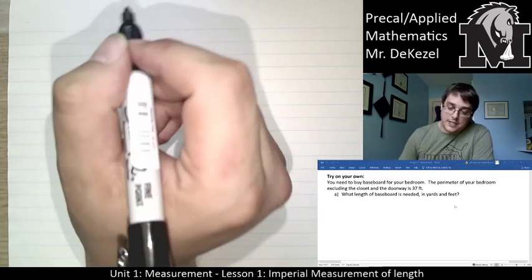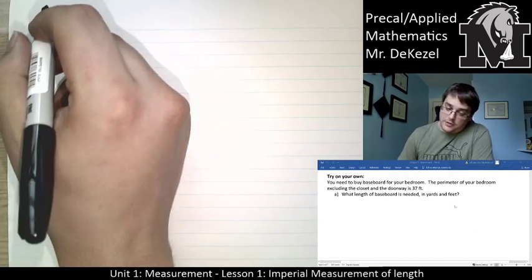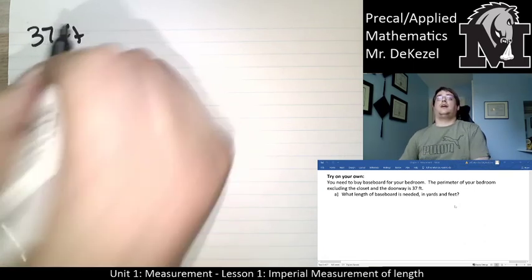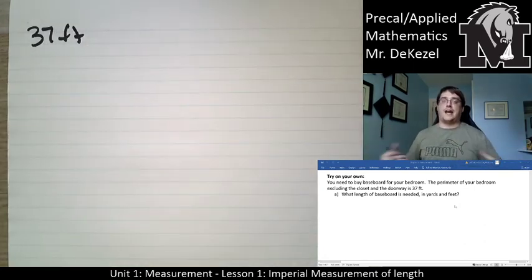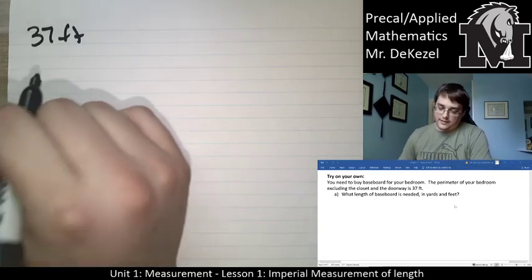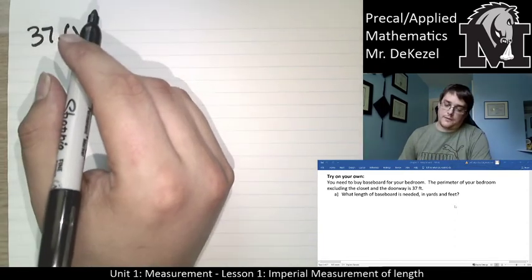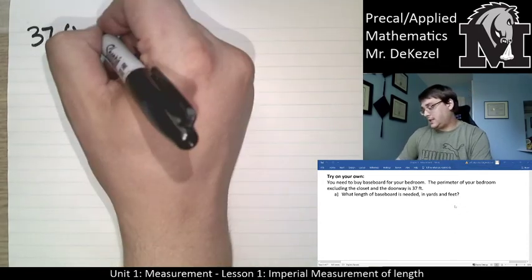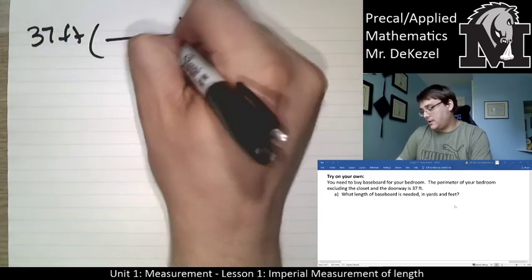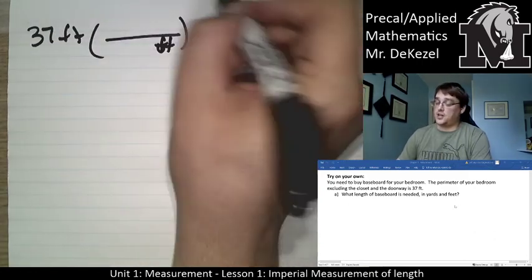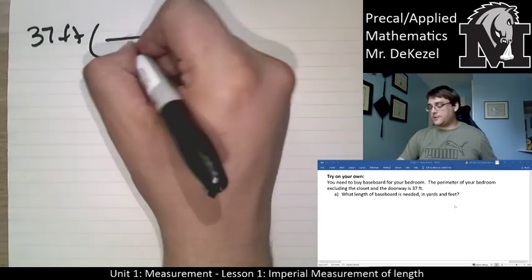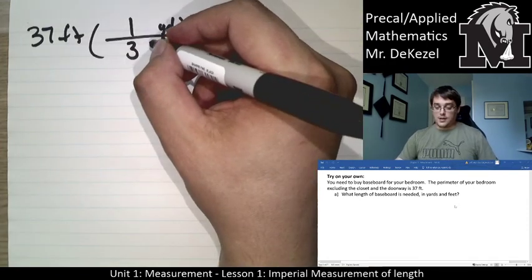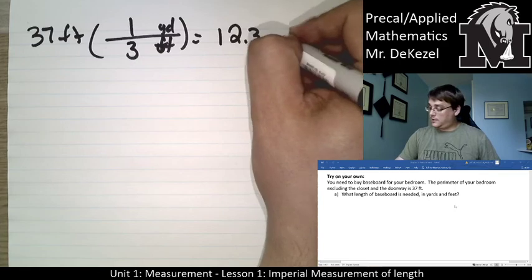This is the last try-it-on-your-own. You're buying baseboard for your bedroom; the perimeter is 37 feet. What length of baseboard is needed in yards and feet? We're converting feet into yards — yards goes on the top, feet on the bottom. There are 3 feet in one yard. 37 divided by 3 gives us 12.3 yards — so the 12 is good, but we need to carry down the 0.3.